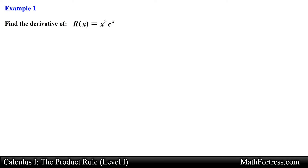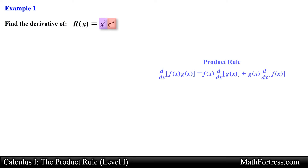Find the derivative of r of x equals x cubed times e to the x. The first thing you should notice is that we have a product of two functions — in this case the power function x cubed and the exponential function. Since we have a product of two functions, we can find the derivative by making use of the product rule. In order to apply the product rule we need to decide which function is going to be the first function, in this case f of x, and which one will be the second function, in this case g of x.